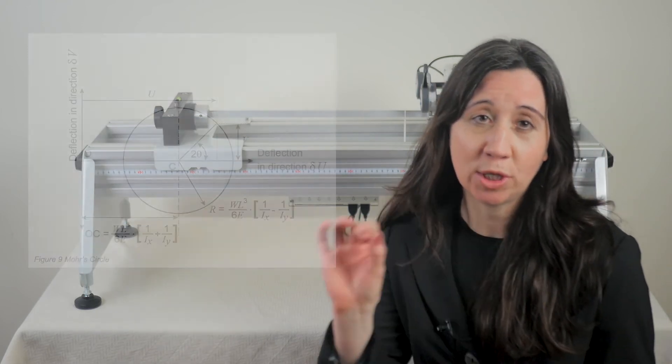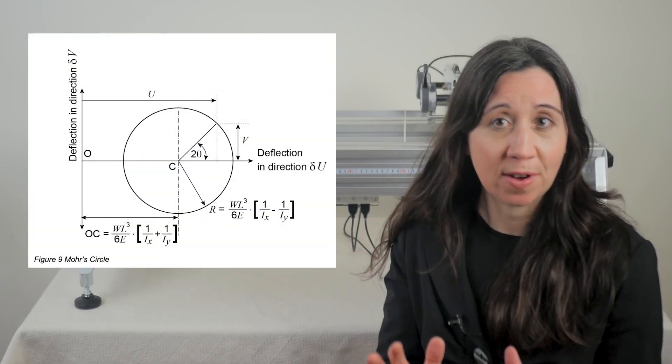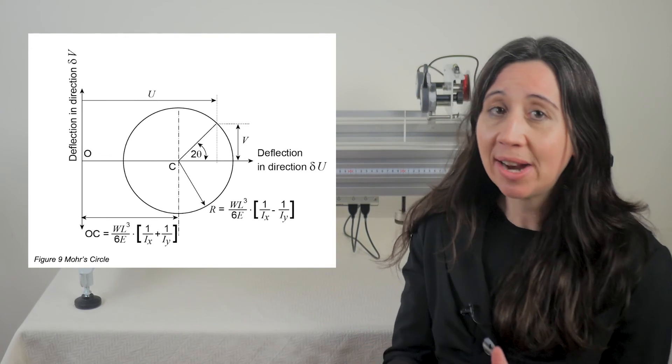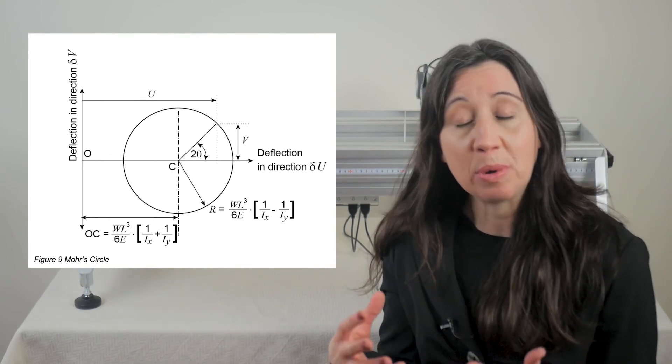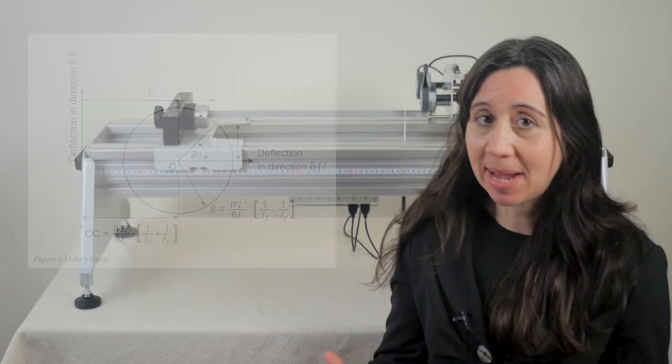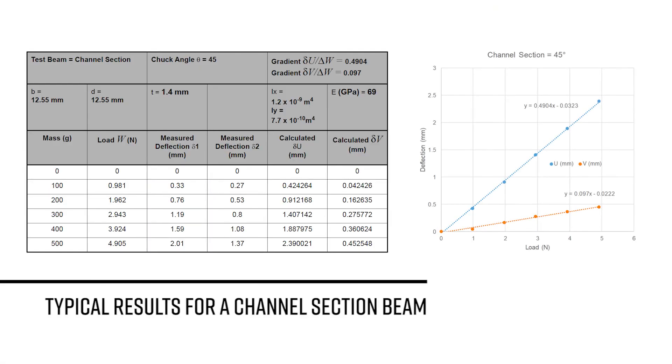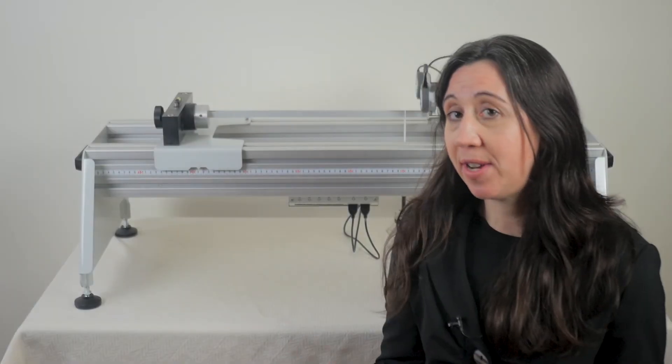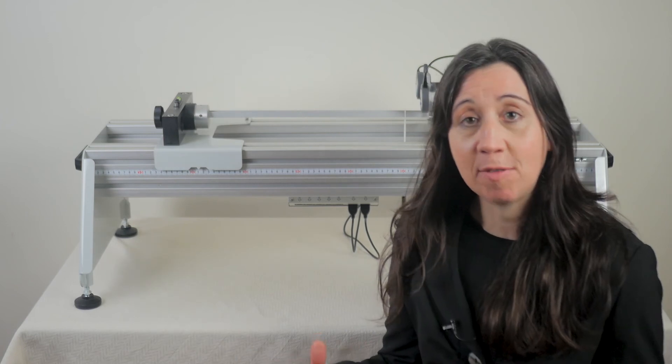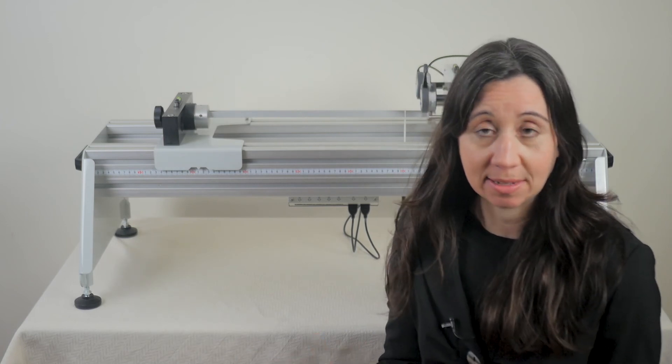You can plot the results on a Mohr circle which then allows you to find the principal second moment of area and position of the principal axis. These may be compared to those for the arbitrary section axes and the values calculated by textbook beam equations. You can watch a separate video that shows how to carry out this experiment and see some sample results.